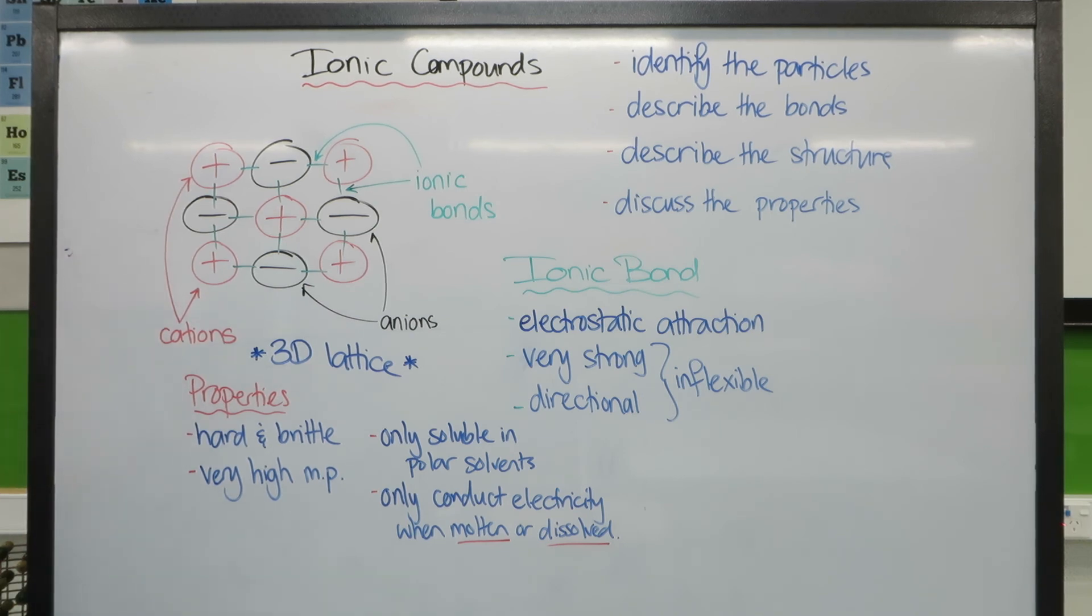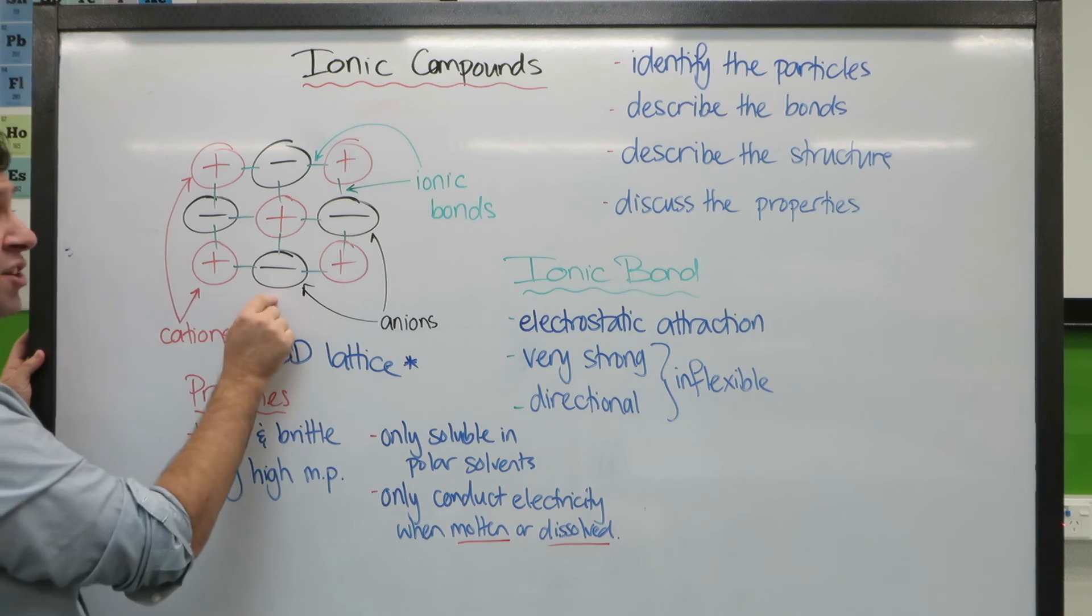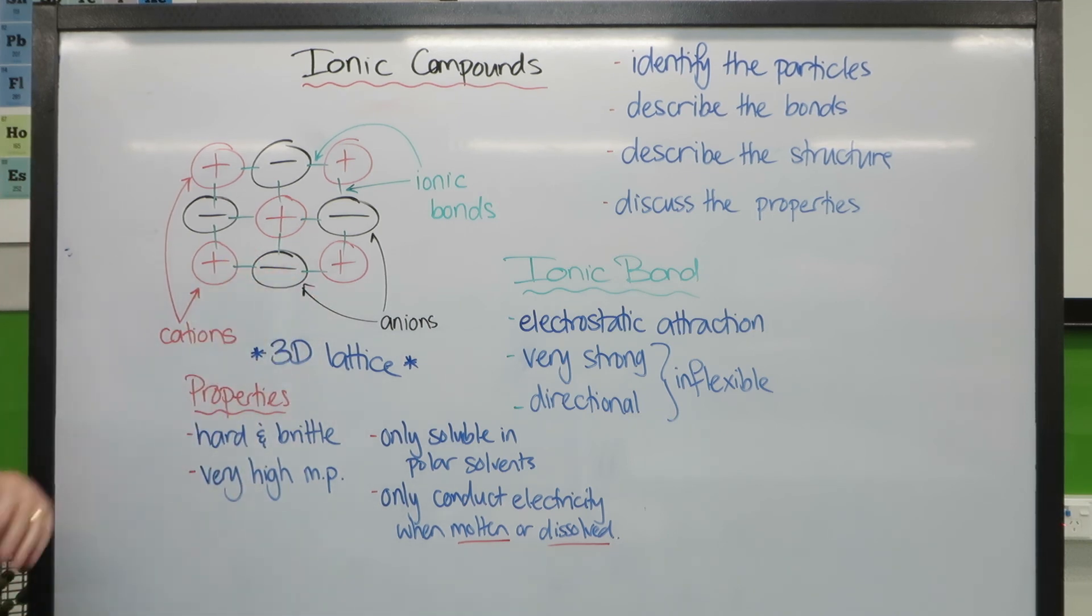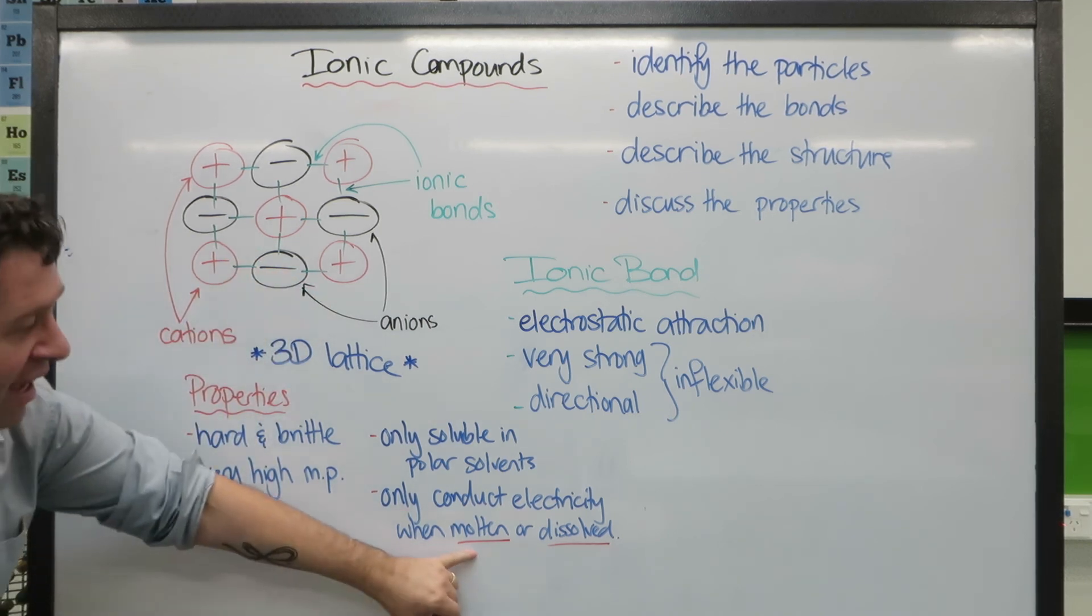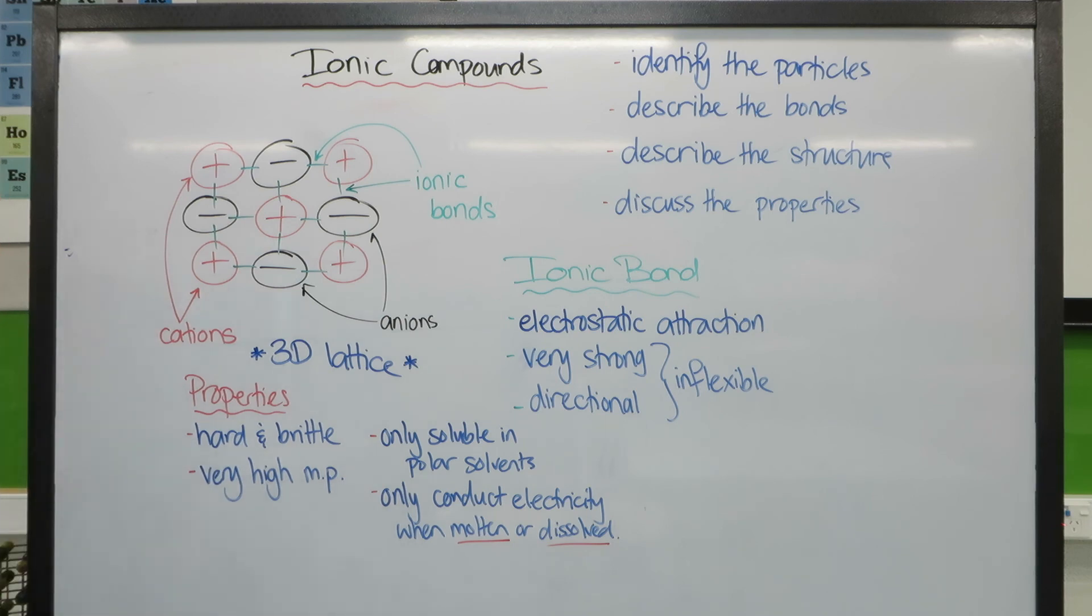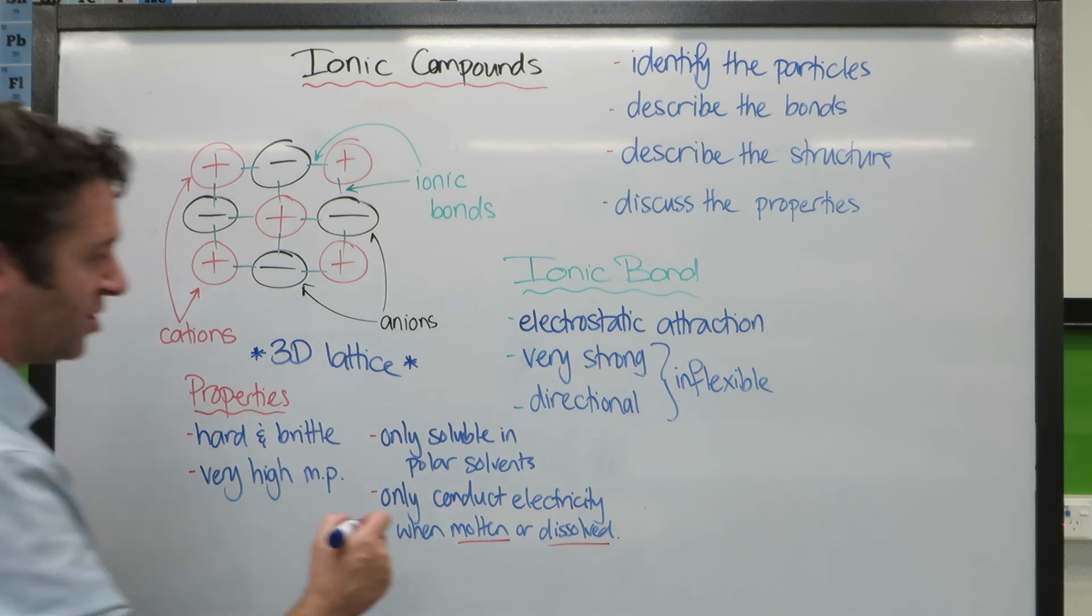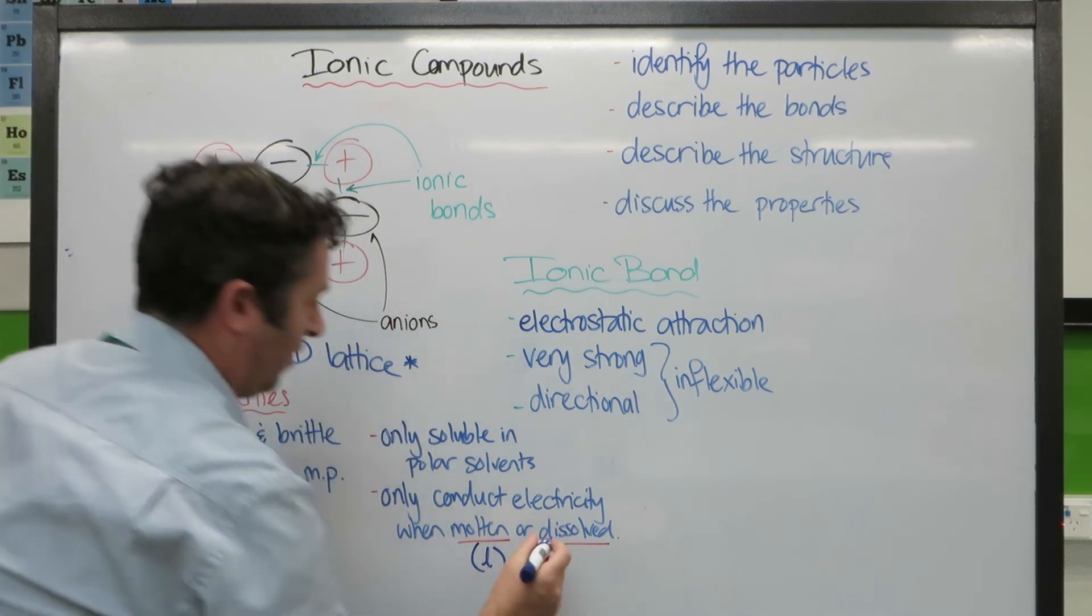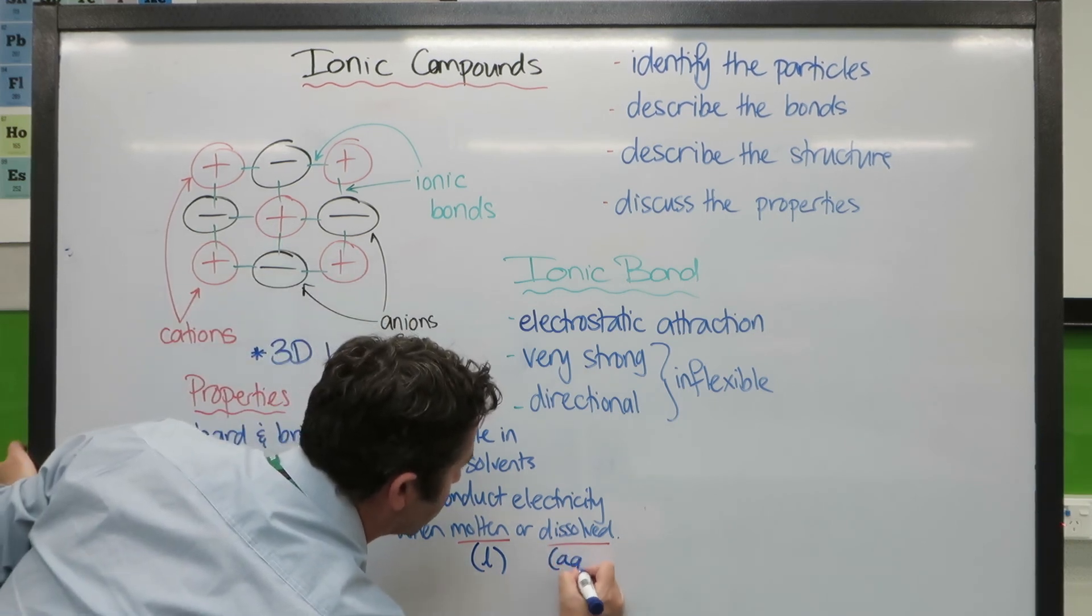Then the ions are free to move. And because they have a charge, and they are free to move, they will conduct electricity in these two states. So molten would be our little subscript of an L, and dissolved probably is going to be in water, so AQ.